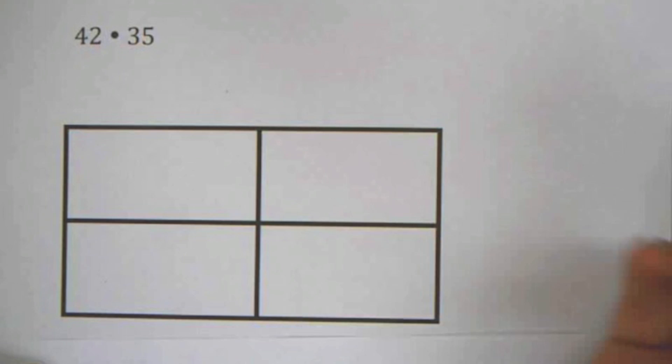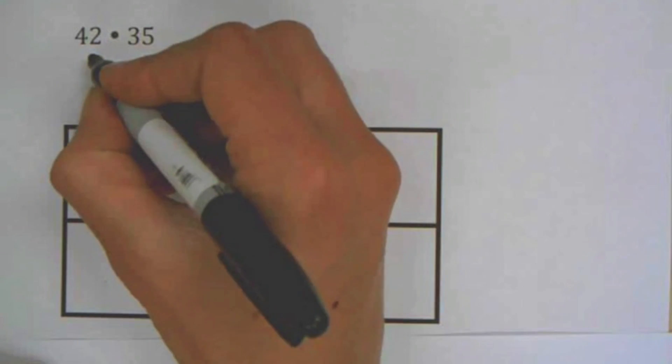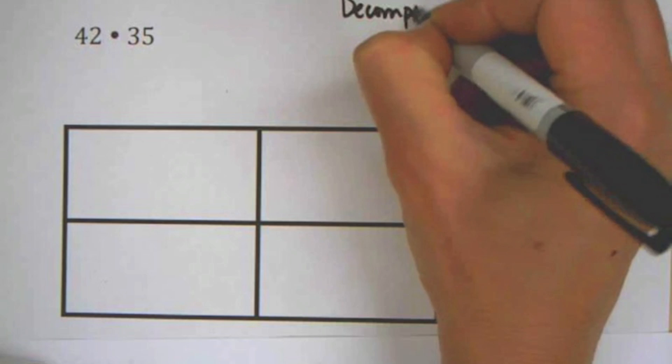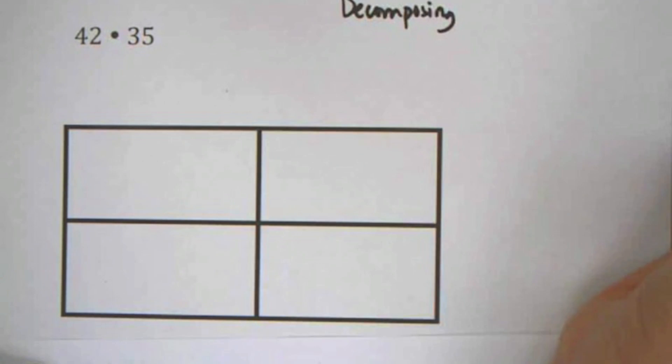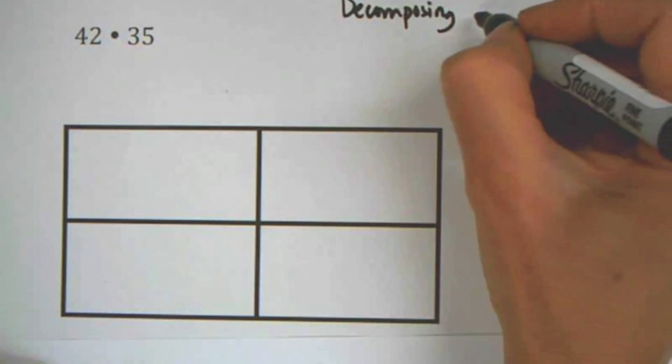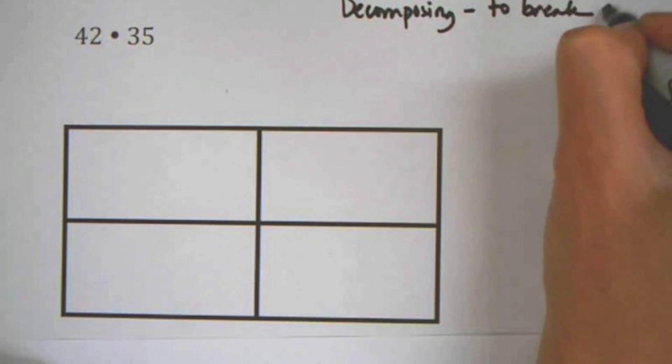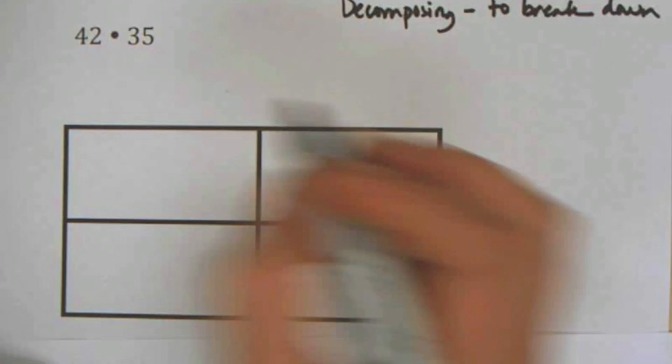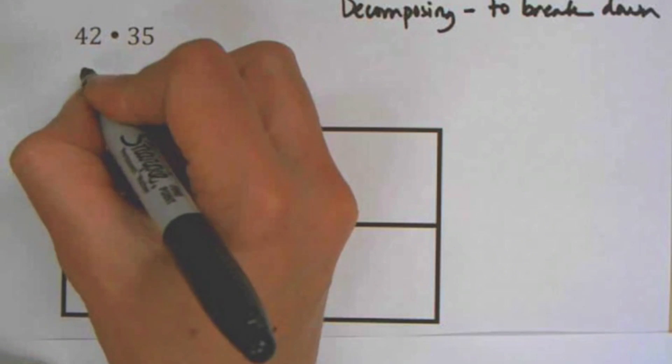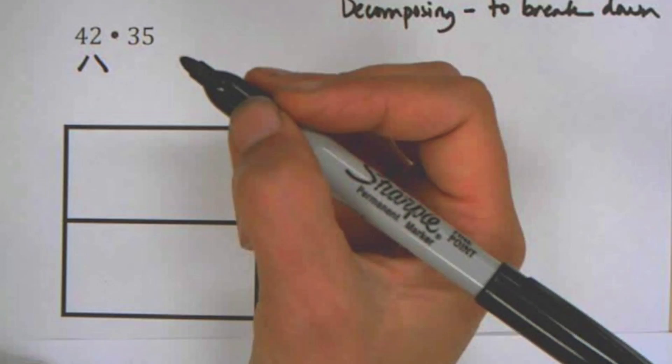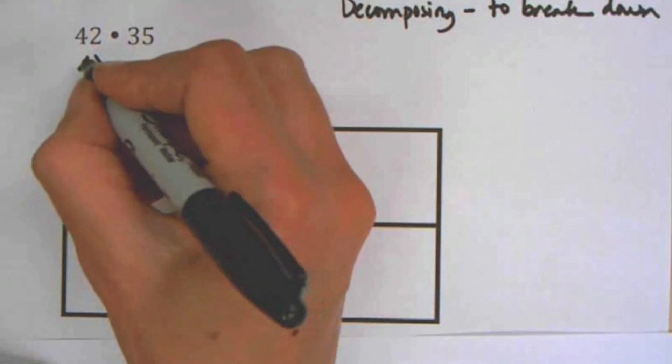So the first thing we're going to do when we multiply using a generic rectangle is we're going to take each number and we're going to do what's called decomposing it. And you may remember from science that decompose means to break down. So what we're going to do is we're going to take our numbers and we're going to break them down into smaller bits.